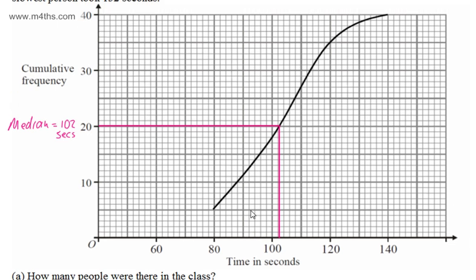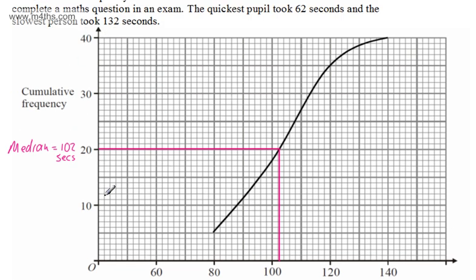The lower quartile is found by splitting these 40 people into 4, so the lower quartile is taken from the 10th person. This tells us that 25% of the people who sat this paper completed the question in 88 seconds or less — the quickest 25% of people. So the lower quartile, or Q1, is give or take about 88 seconds. Around 50% of students did it in 102 seconds or quicker, and one quarter did it in 88 seconds or quicker.